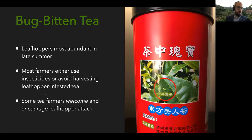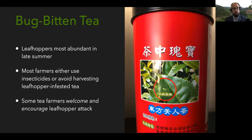Because leafhoppers are a pest and are most abundant in late summer, farmers often just avoid harvesting tea then because it's generally lower quality anyway. Or if they do harvest, they may control those insects with insecticides. However, there are some farmers who actually welcome and encourage leafhopper attack. There's even a tea canister that advertises the tea inside has been attacked by leafhoppers.